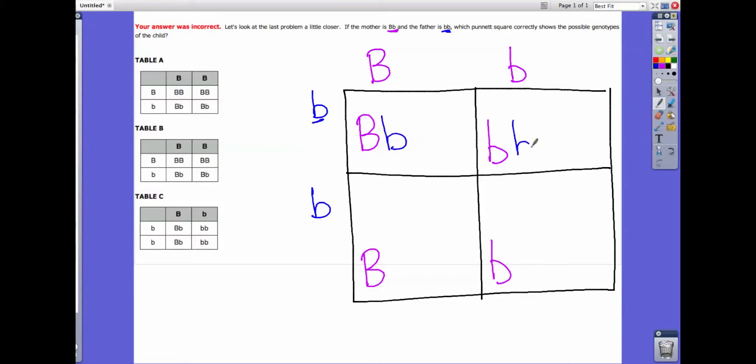With the blue ones, you work your way across, so we have little b, little b, and you work your way across, little b, little b, and that is the way you set up a Punnett square table.